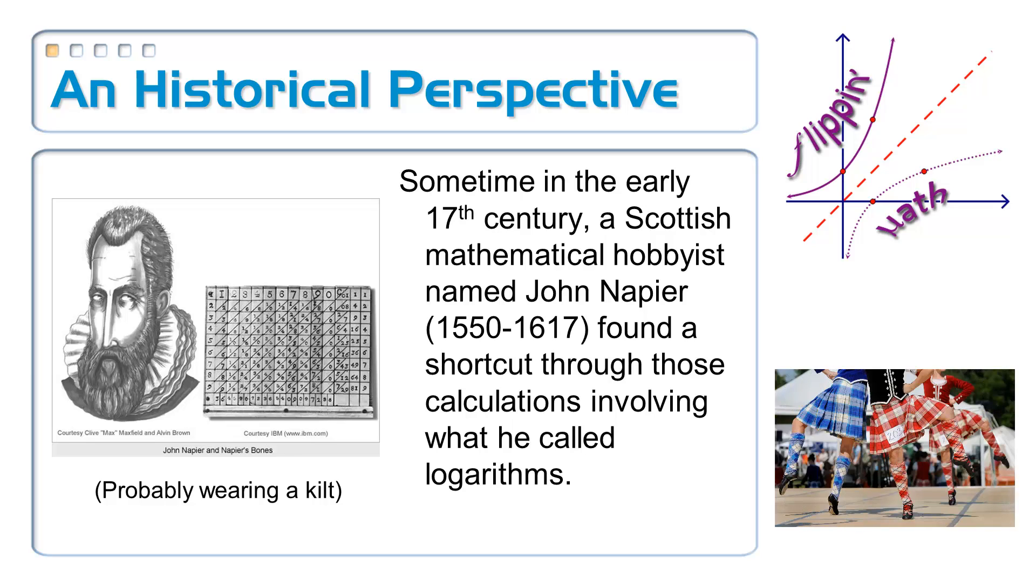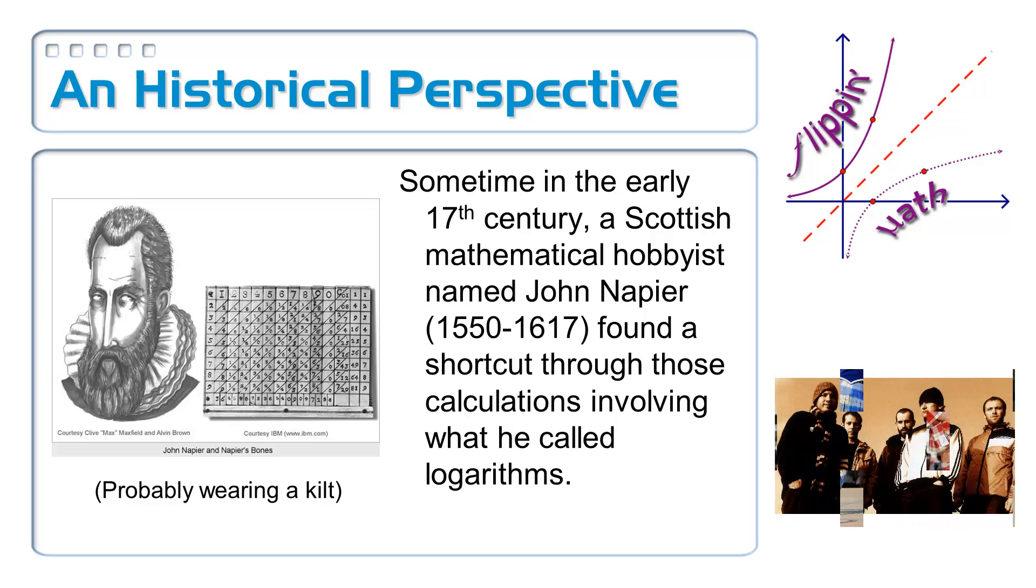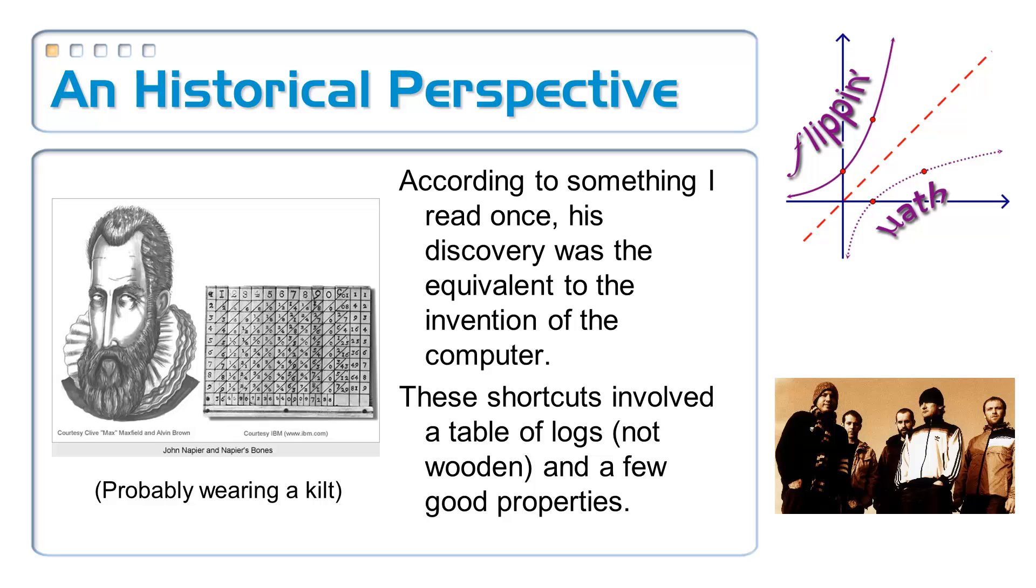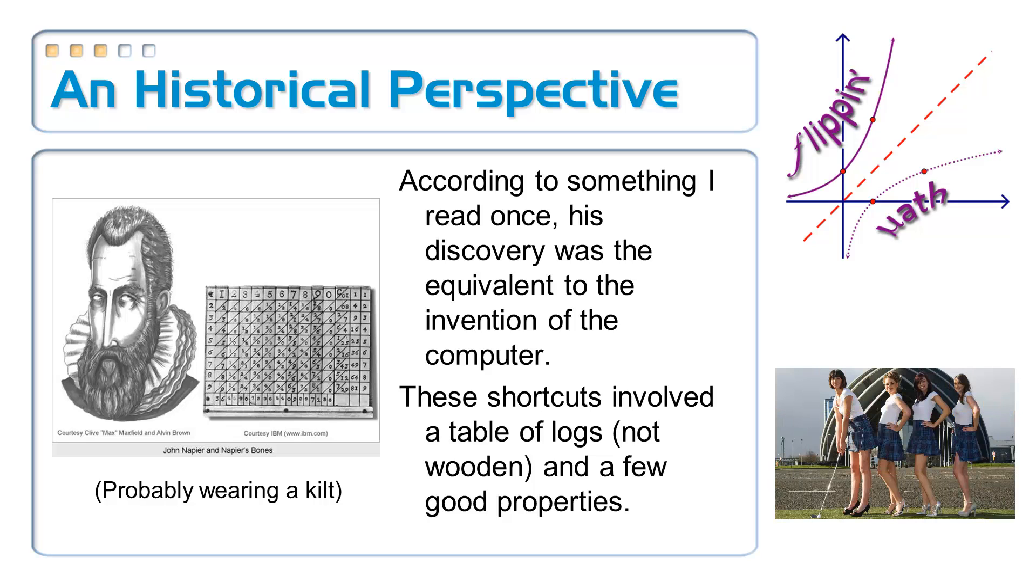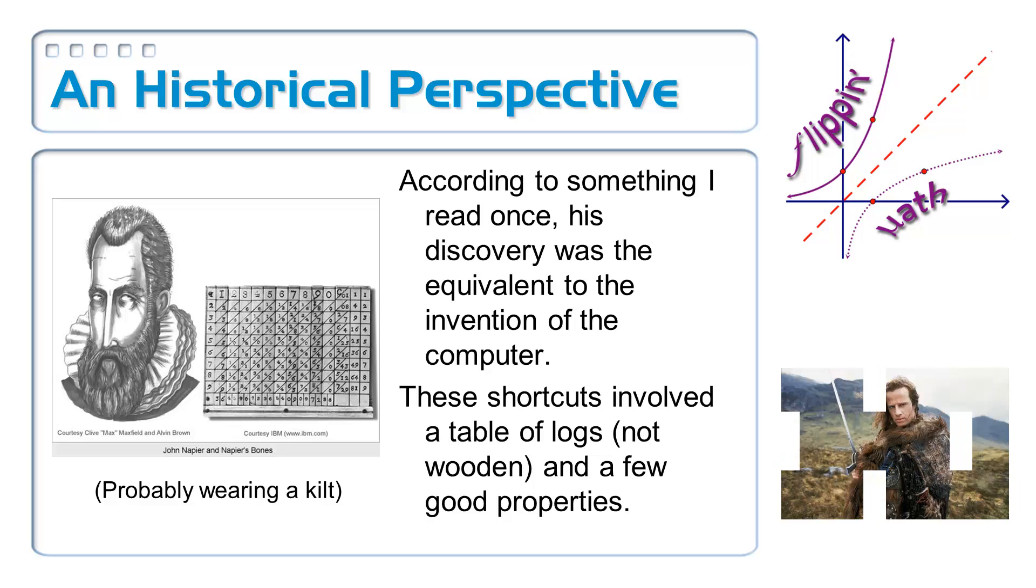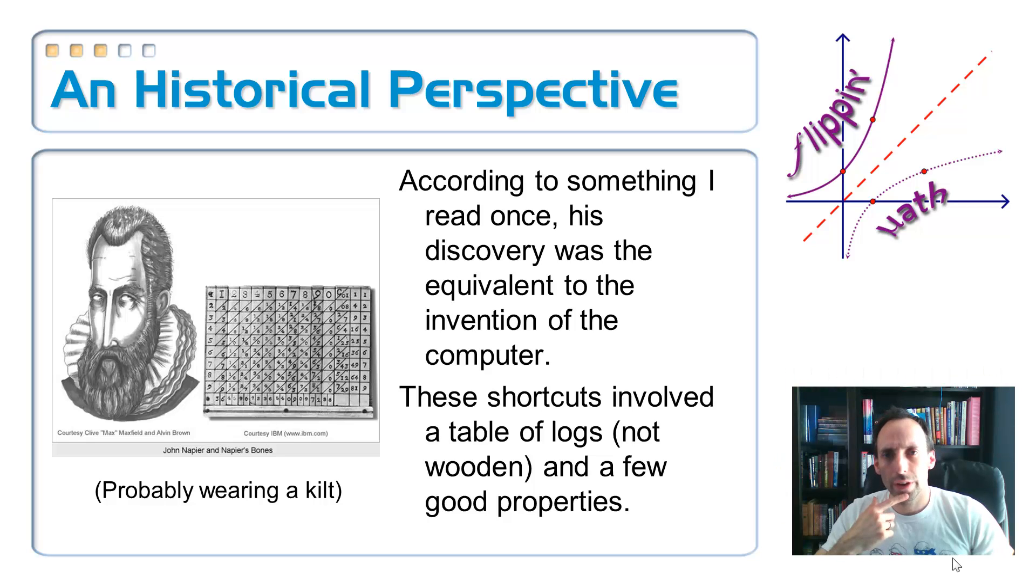Sometime in the early 17th century, a Scottish mathematical hobbyist named John Napier found a shortcut through these calculations involving what he called logarithms. According to something I read once, his discovery was the equivalent to the invention of the computer. These shortcuts involved a table of logs, not wooden, and a few good properties. Also, John Napier was probably wearing a kilt. All right, very interesting.